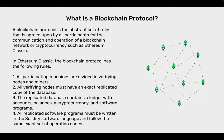What is a blockchain protocol? A blockchain protocol is the abstract set of rules that is agreed upon by all participants for the communication and operation of a blockchain network or cryptocurrency such as Ethereum Classic. In Ethereum Classic, the blockchain protocol has the following rules: one, all participating machines are divided into verifying nodes and miners; two, all verifying nodes must have an exact replicated copy of the database; three, the replicated database contains a ledger with accounts, balances, a cryptocurrency, and software programs.